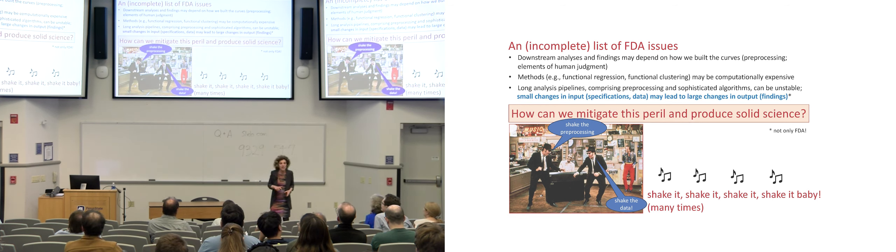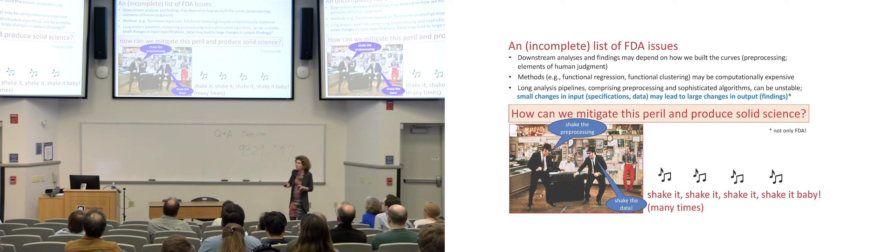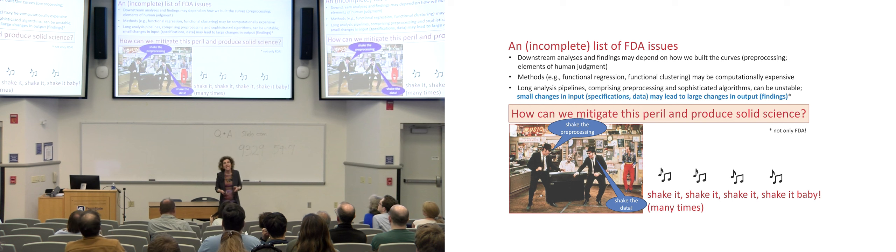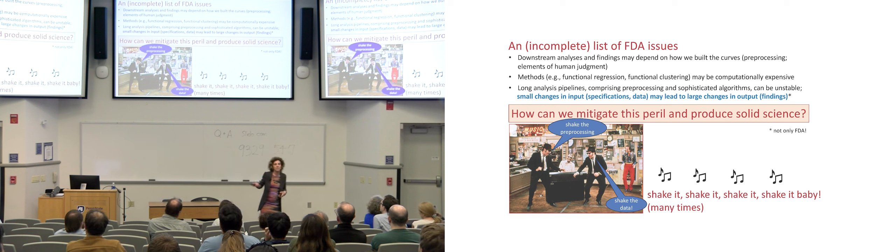So, I don't know how many of you recognize this. This was a cult movie and a cult song. I'm trying to make light of an issue that is actually very, very serious. The idea here is, at least this is one way to go about this, that we can and we ought to shake things. We should shake the pre-processing specifications. We should shake the data, in such a way that we can see what outcomes survive. Instability here means that with small changes in input, the specifications or the data can come large changes in output. And we want to see what survives this shaking.